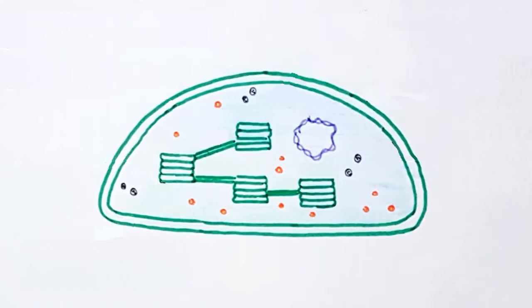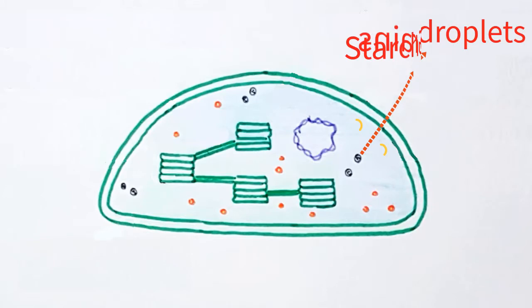The chloroplast is filled with a fluid or liquid matrix known as stroma. Stroma contains grana, DNA, ribosomes, starch grains, and lipid droplets.